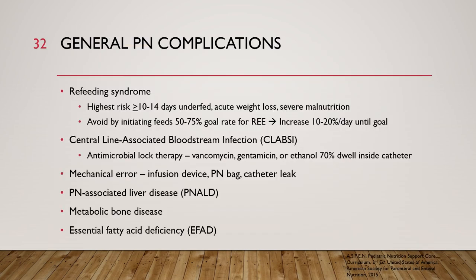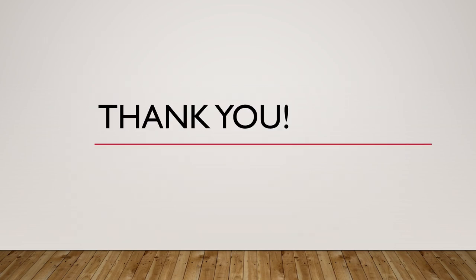General PN complications include refeeding syndrome, central line associated bloodstream infections (CLABSI)—which can be managed with antimicrobial lock therapy using vancomycin, gentamicin, or 70% ethanol to sterilize the catheter—mechanical errors such as infusion device errors, PN bag issues, or catheter leaks, PN-associated liver disease (PNALD), metabolic bone disease, and essential fatty acid deficiency. Thank you for listening to this lecture on pediatric nutrition support.